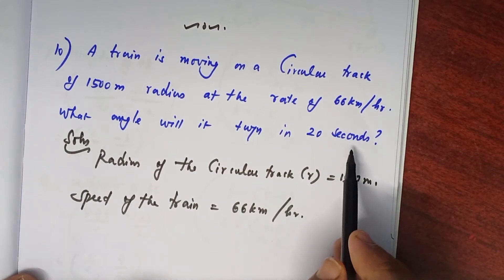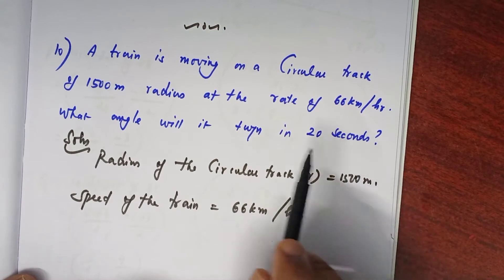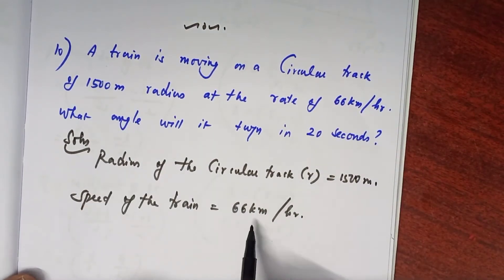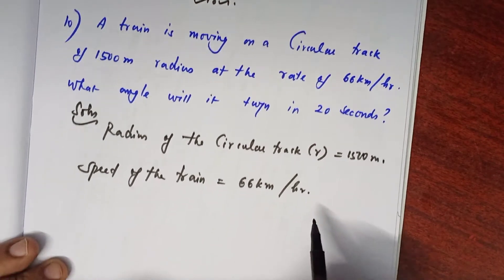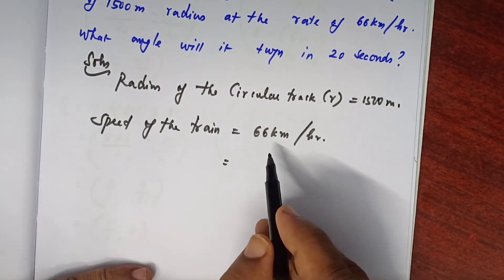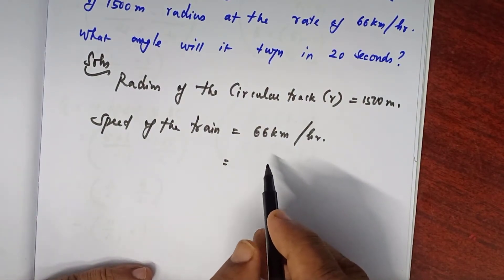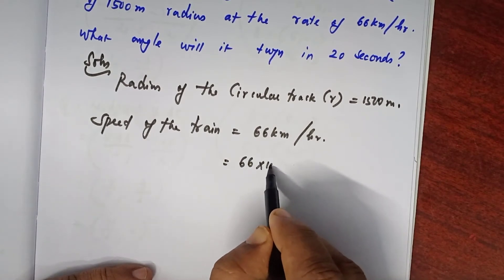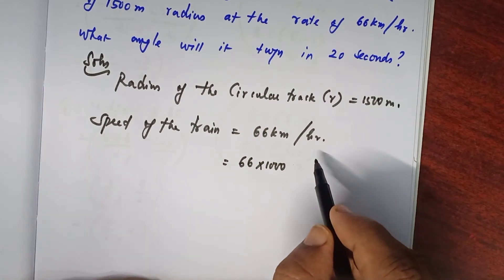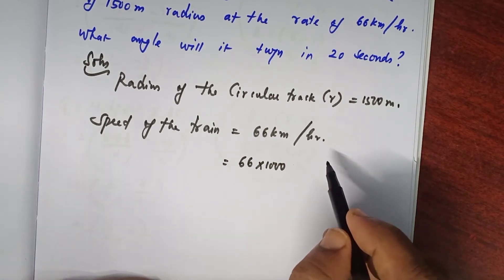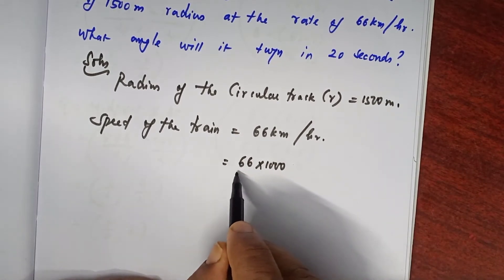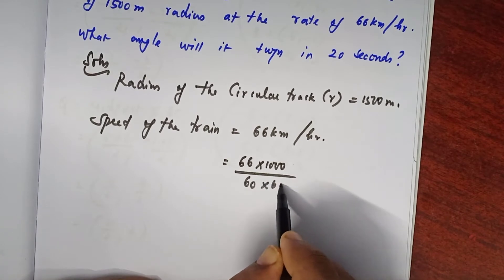Here the time is in seconds and the distance is in meters, so we have to change km per hour into meter per second. For converting kilometer into meter, multiply by 1000, because 1000 meters equals 1 km — so 66 into 1000. Then, per hour to per second, divide by 60 into 60.